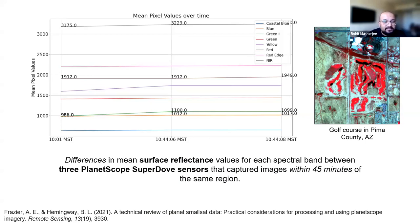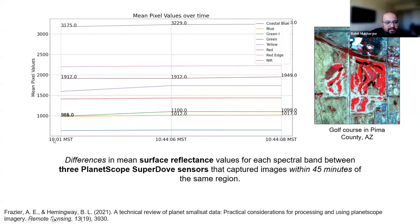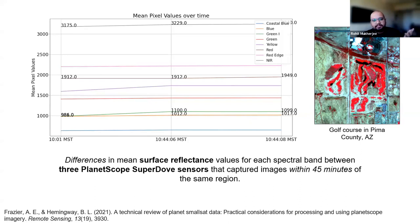This is a PlanetScope SuperDove example — acquisitions within 45 minutes of the same region by different SuperDove sensors. Within 45 minutes, the mean surface reflectance for each band varies over time, which is very baffling. Why would it change within a few minutes? This is 10-1 MSP, within 43–44 minutes. These things make it very difficult to directly use surface reflectance values in our methods. There is a paper I mention below that talks about across-sensor differences between different satellite constellations.